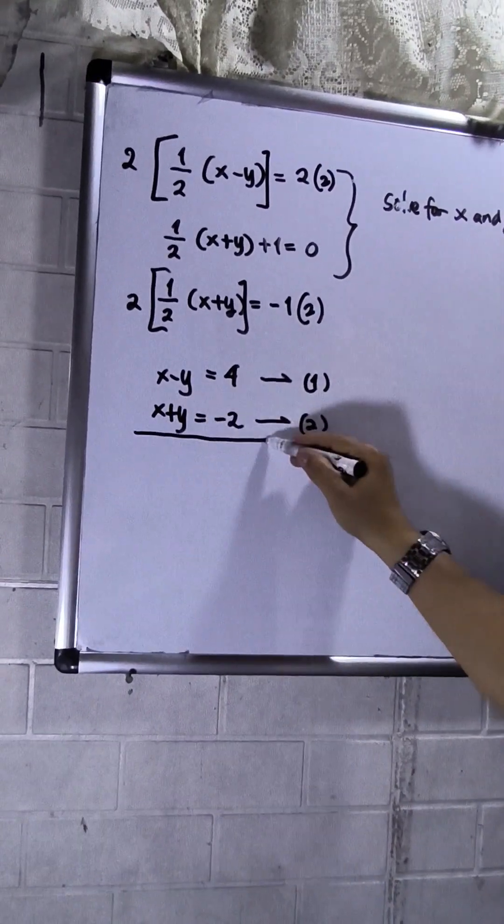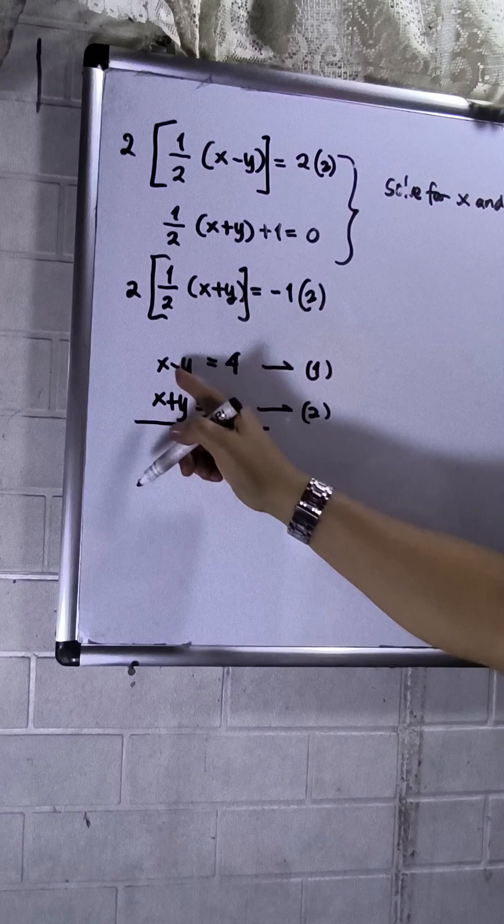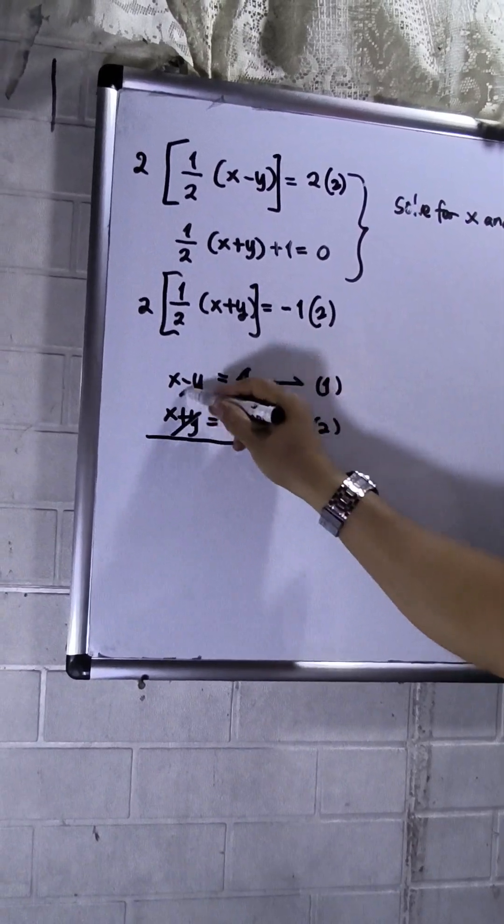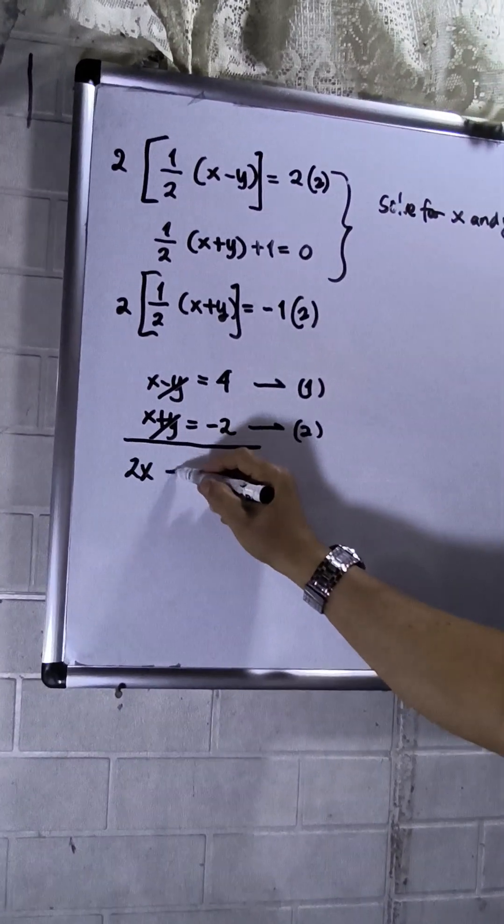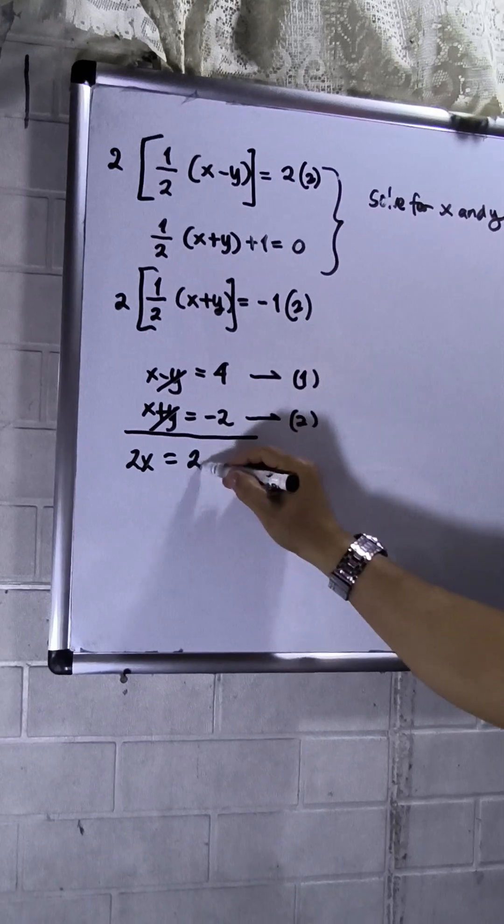I will use elimination method. So since negative y and positive y, this will be crossed out. So I have now 2x is equals to 4 minus 2. That will be 2.